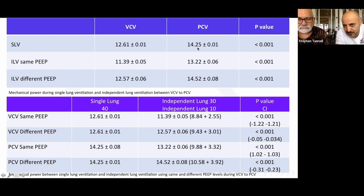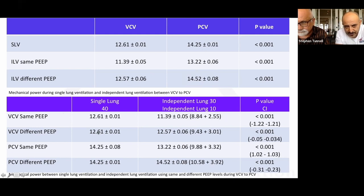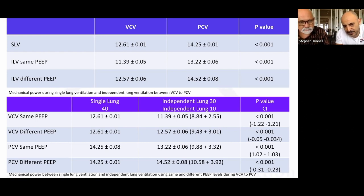Same finding with pressure control: independent lung ventilation at the same PEEP gave lower mechanical power than single-ventilator dual-lung ventilation. With different PEEPs (bad lung PEEP 10, better lung PEEP 8), volume control mechanical power was slightly less. In pressure control it was slightly higher at 14.52 vs. 14.25. Overall: single lung was 12.61, independent lung total was 11.39. The compliance 30 lung: 8.24; compliance 10 lung: 2.55. This tells me independent lung ventilation may be safer — especially in unilateral lung disease.